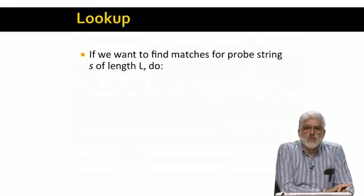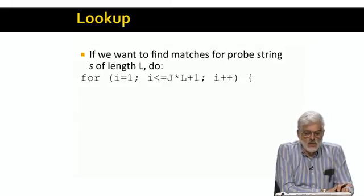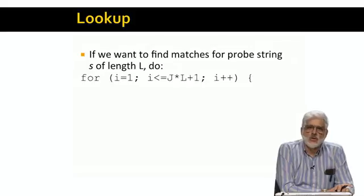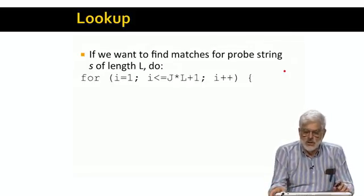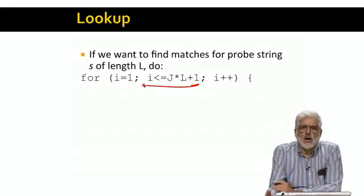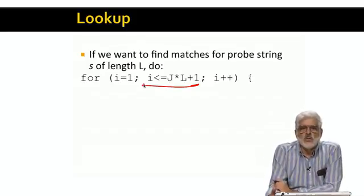Here's the pseudocode for how we find candidate matches for a probe string S. First, we do a loop on the positions of I that are part of the prefix of S. This loop is just like the simpler form of lookup we described earlier. In particular, this limits I to be only the positions in the prefix of the string S.